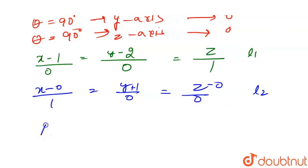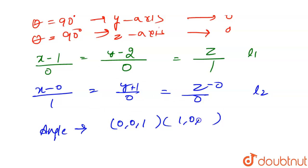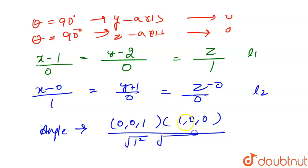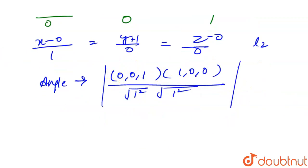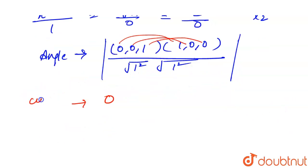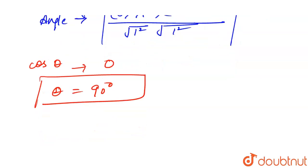Now we find the angle between the lines using the dot product of the direction ratios. cos(θ) = (0·1 + 0·0 + 1·0) / (√(0²+0²+1²) · √(1²+0²+0²)) = 0/1 = 0. Since cos(θ) = 0, θ = 90 degrees. The angle between the two lines is 90 degrees.